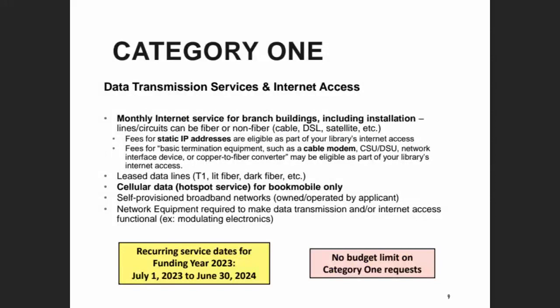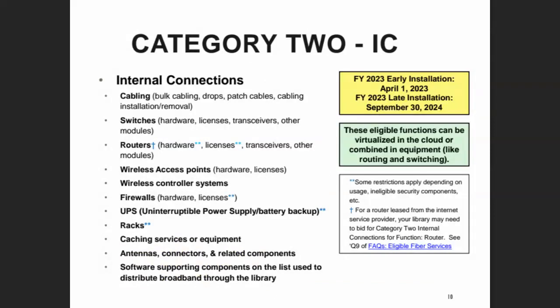Category 1 is about data transmission and internet access — your monthly fiber or cable internet to the building, and also hotspot service specifically for the library bookmobile. Now we'll focus more on Category 2. This list is kind of long. I encourage you to set up an appointment to talk to me or to your IT person about your needs, because I realize some folks who handle the E-Rate filing are not the IT person.